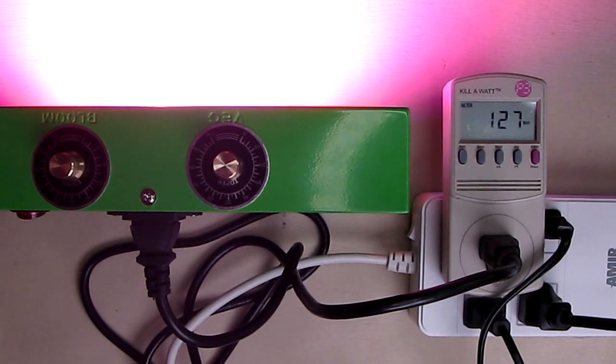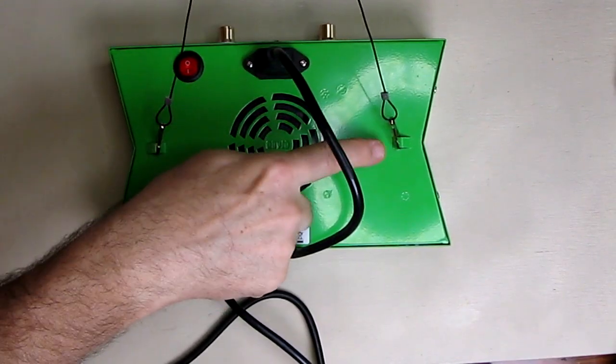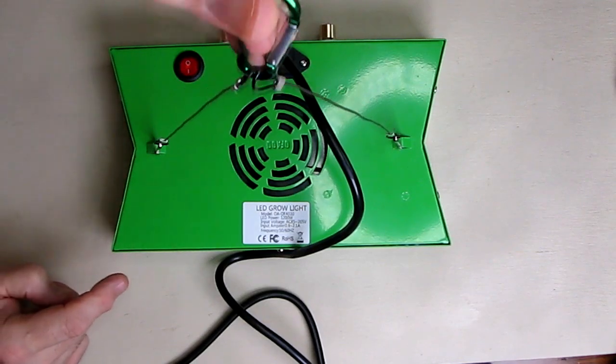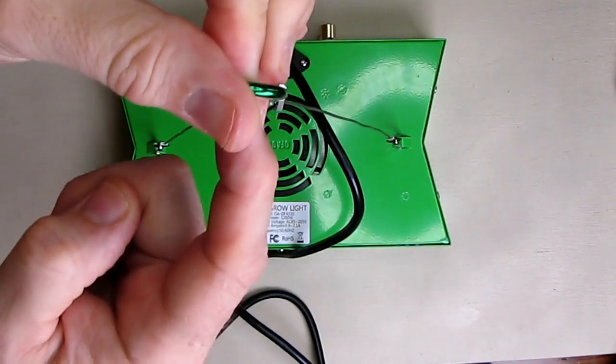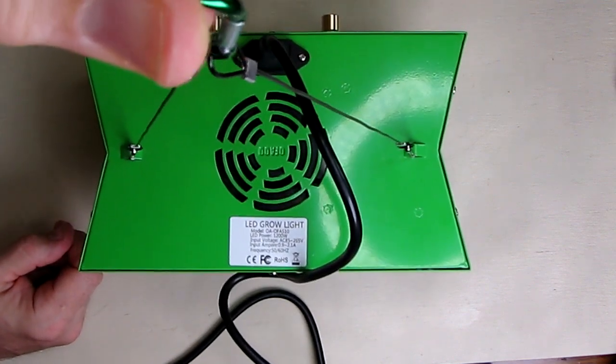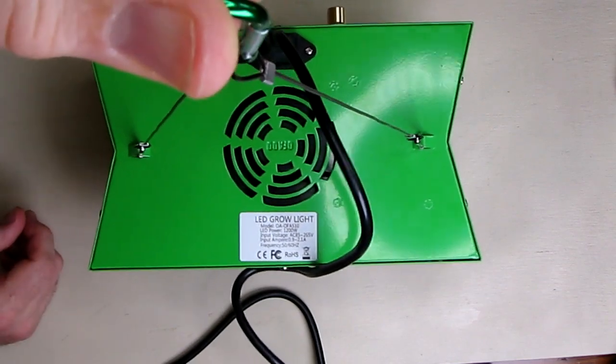It's not producing heat and that's all it's drawing from your wall outlet so it's going to save you money compared to any other type of light. Once you hook those up, make sure that you have a small part there on the top and then you could lift this up and hang this wherever you're going to have your plants. You can see it's very nicely balanced.